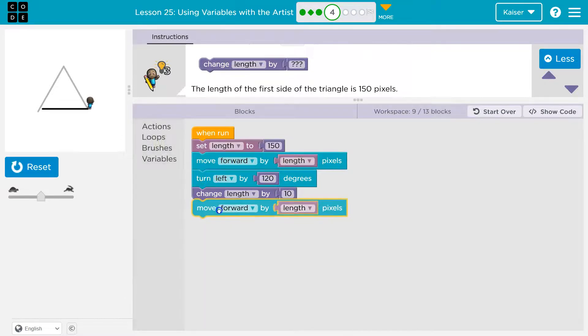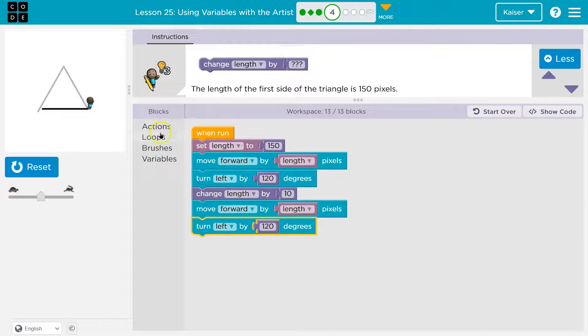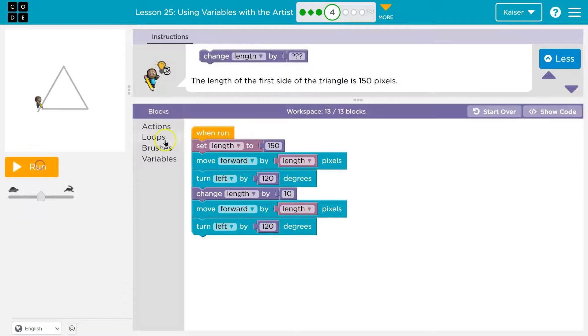Okay. And now what? I'm going to move forward again. How much? Length. And then I need to turn again. Okay. And then I need to move forward, turn each time. So each side, that would mean, let's see if we get two sides. Yep. Two sides.